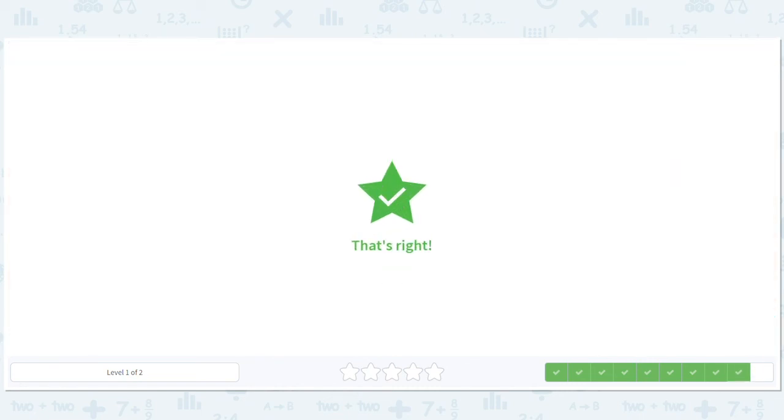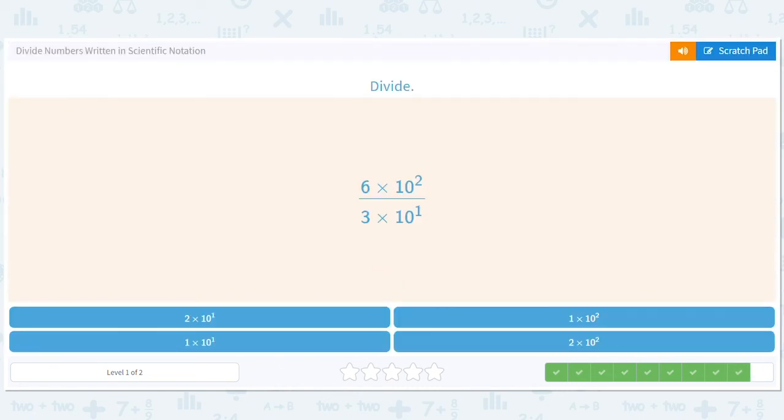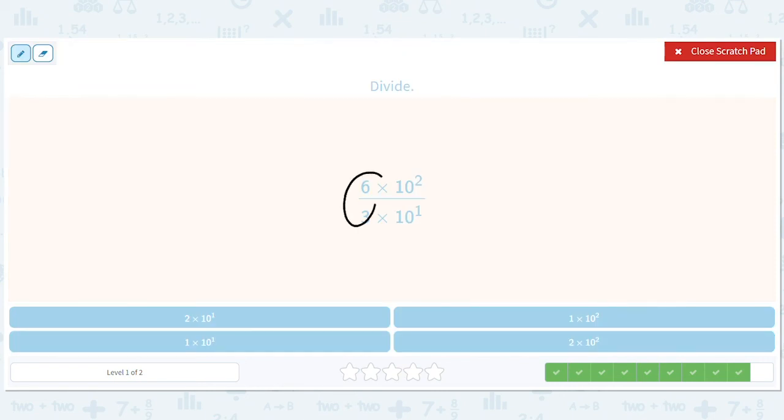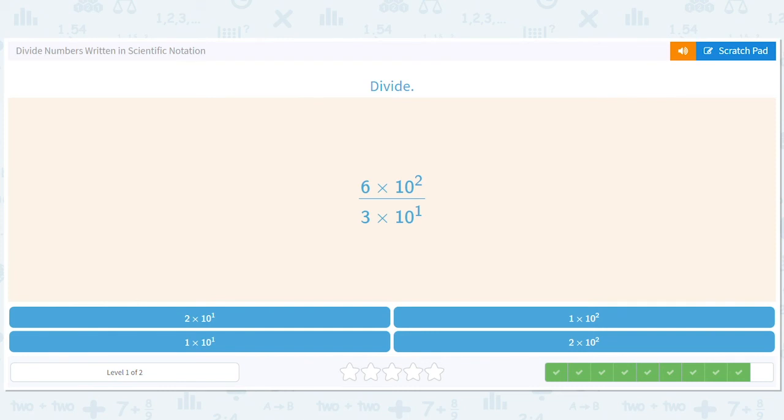All right, how about this? 6 divided by 3 is 2. 10 to the second divided by 10 to the first is 10 to the 2 minus 1. So that's 2 times 10 to the 2 minus 1 or 2 times 10 to the 1. So 2 times 10 to the 1.